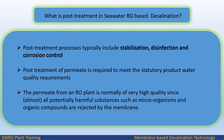Post-treatment in seawater RO-based desalination typically includes stabilization, disinfection, and corrosion control. Post-treatment of permeate is required to meet statutory product water quality requirements. The permeate from an RO plant is normally of very high quality, since almost all potentially harmful substances such as microorganisms and organic compounds are rejected by the membrane.